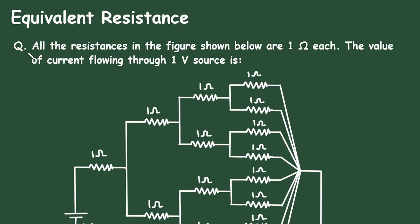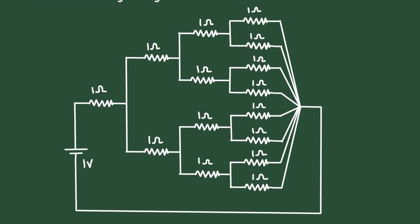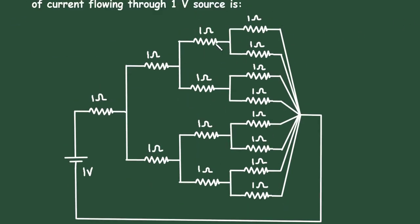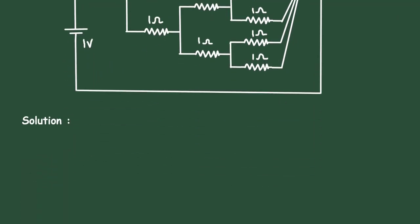Equivalent resistance question: all the resistances in the figure shown below are 1 ohm each. The value of current flowing through the 1 volt source is to be found. In this circuit we have to find the equivalent resistance, then find the total current.